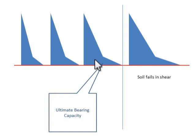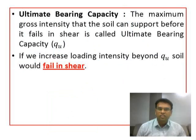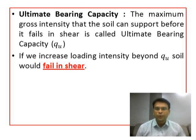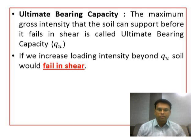The ultimate bearing capacity is the maximum gross intensity of loading that the soil can support before it fails in shear. It is denoted by Q_U. To recap: Q_G is the gross bearing pressure, Q_N is the net bearing pressure or net loading intensity, and Q_U is the ultimate bearing capacity.